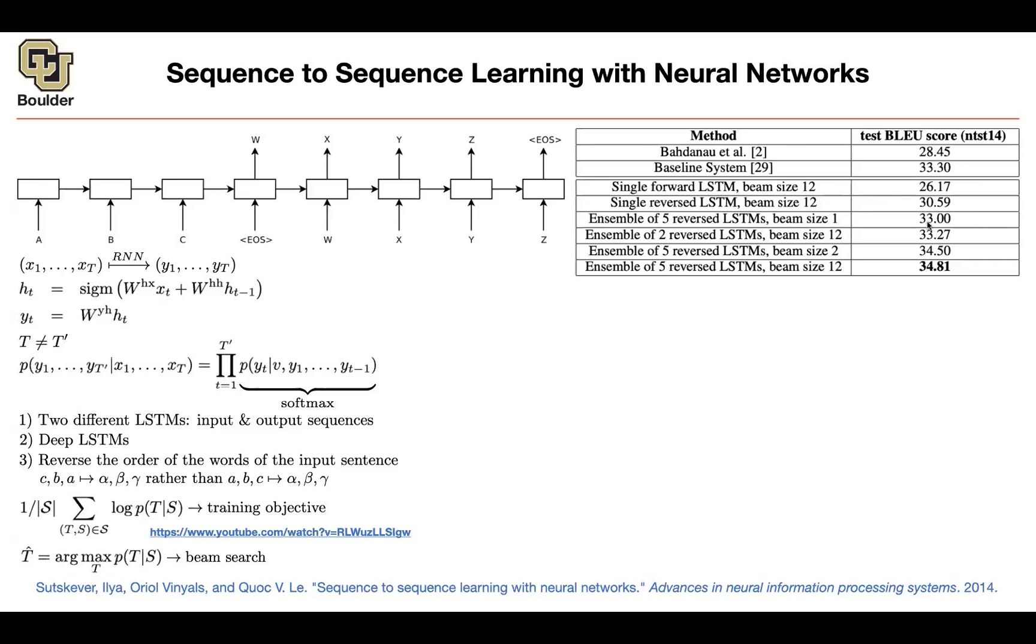But then it's a matter of ensembling. Even if you ensemble five reversed LSTM with beam sizes of 1 and 12, you are still below the baseline. So the baseline is very hard to beat. If you use ensemble of five with beam size 2 and beam size 12, and then you finally manage to beat the baseline system with an ensemble of five reversed LSTMs.